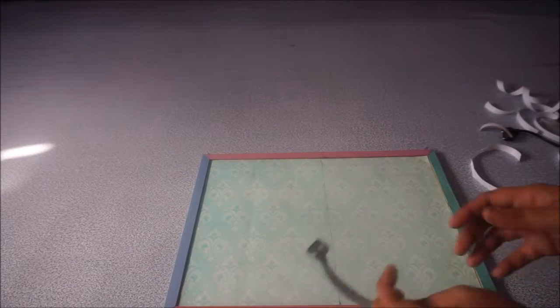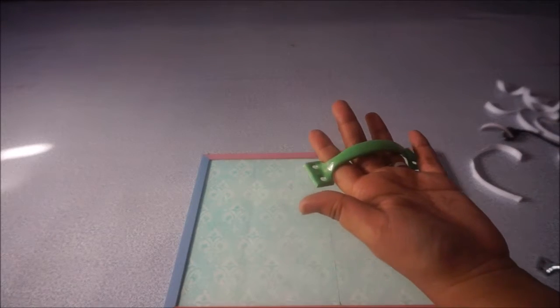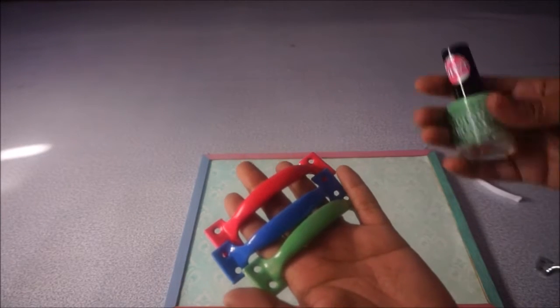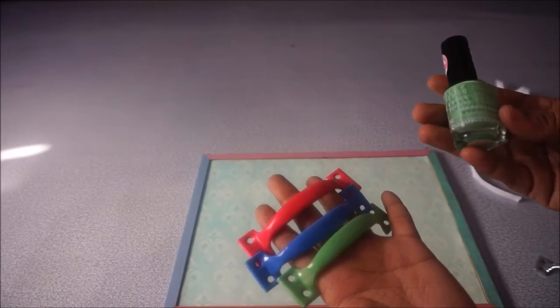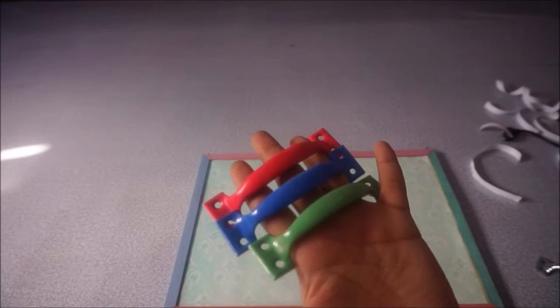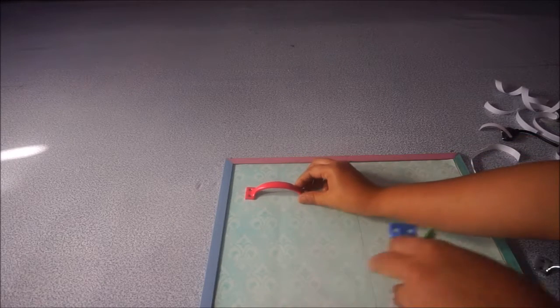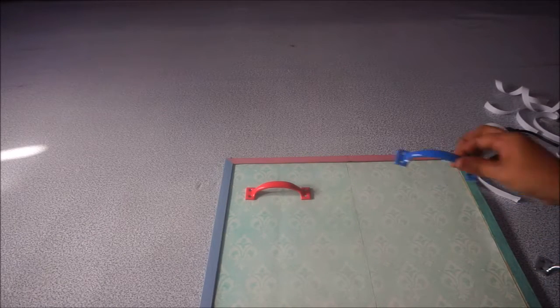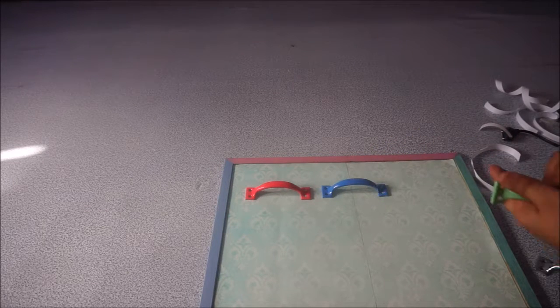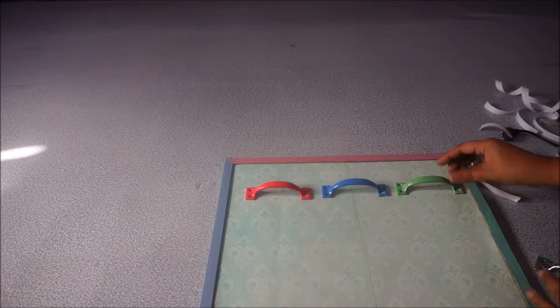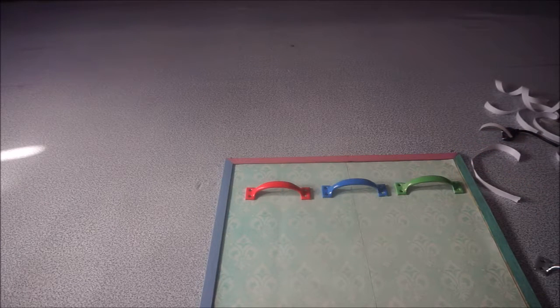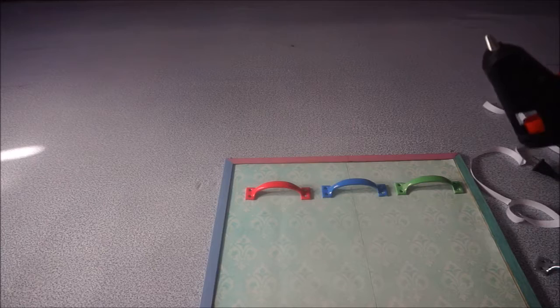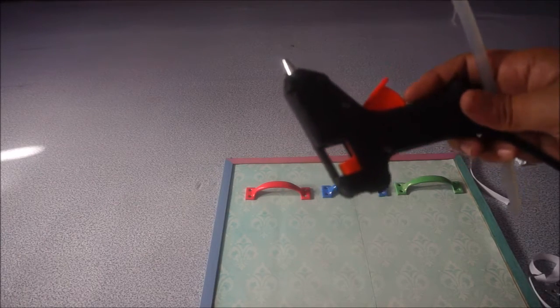Next, what we're going to do is attach these door handles. I colored them using the nail polish that I have, the old nail polish that I don't use anymore. First, you measure where you want to place the door handles. If you're satisfied with that arrangement, we'll use a glue gun and glue stick.